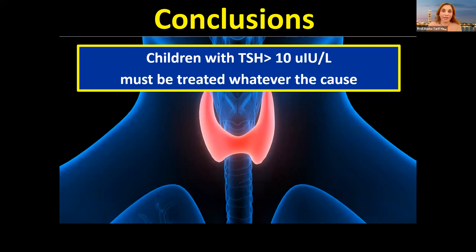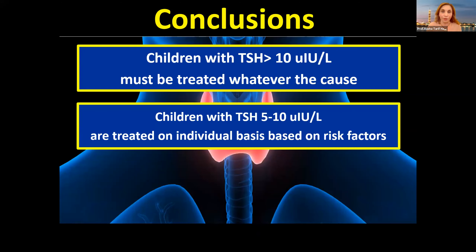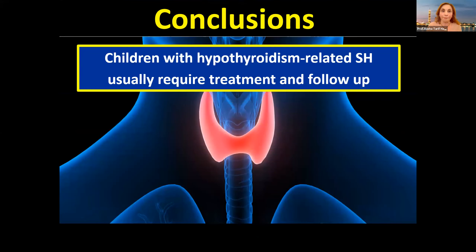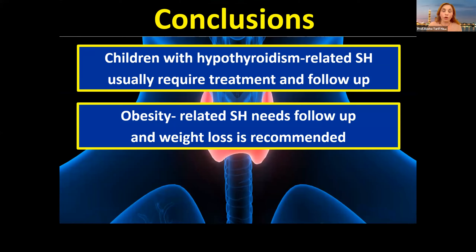Children with TSH above 10 must be treated, whatever the cause, even if idiopathic. Children with TSH from 5 to 10 are treated on an individual basis based on risk factors. Children with idiopathic subclinical hypothyroidism are usually self-limiting and do not require treatment except if TSH is above 10. Children with hypothyroid-related subclinical hypothyroidism when there is pathology usually require treatment and follow-up.